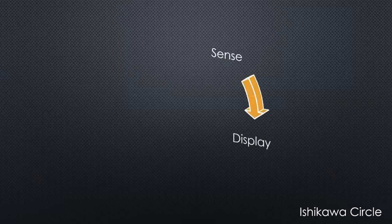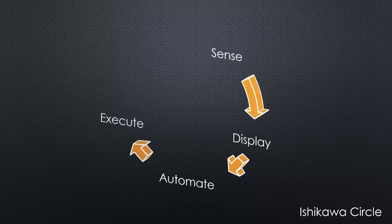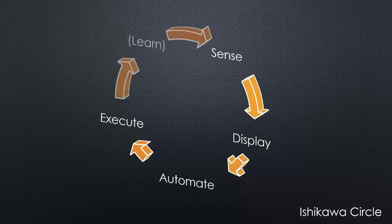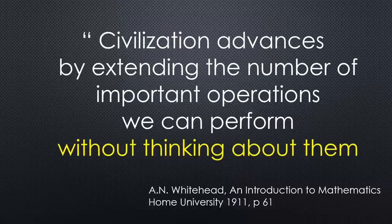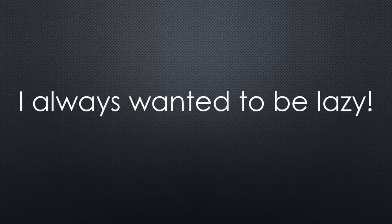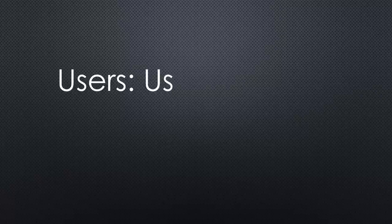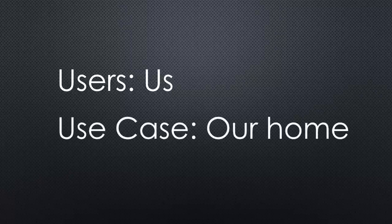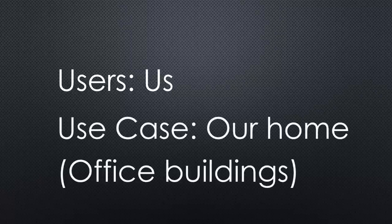These days, we want to sense our environment, display its status and history in proper diagrams, let the automation decide the actions, and ensure that things are correctly executed — best without even knowing that something happened. This definition is too broad, so we restrict the users to us and the use case to our homes. Many use cases also apply to office buildings and alike, of course.